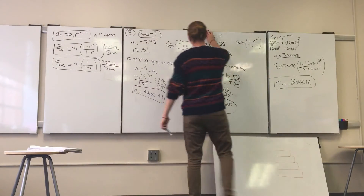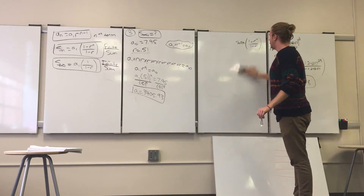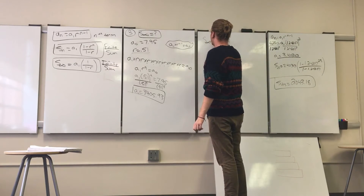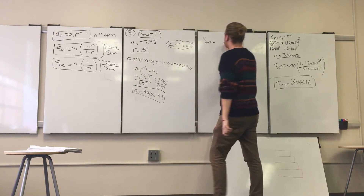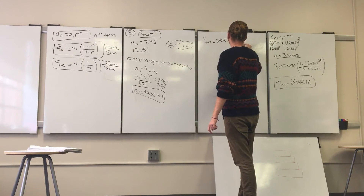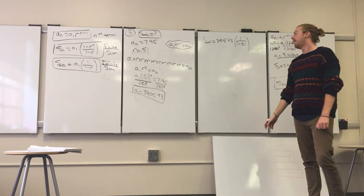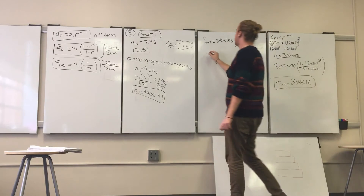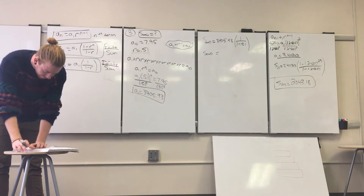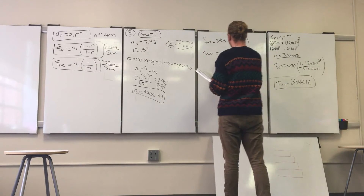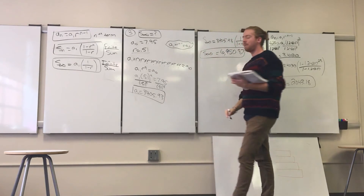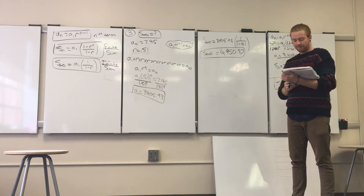Now we have A_sub_1 and we can plug into the infinite sum equation. S_sub_infinity equals A_sub_1, which is 3,405.93, times 1 over (1 minus 0.51). This equation is simpler than the finite sum equation. When you plug that into your calculator, you should get the sum over all the infinite terms equals 6,950.87.